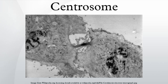The mother centriole, the older of the two in the centriole pair, also has a central role in making cilia and flagella. The centrosome is copied only once per cell cycle so that each daughter cell inherits one centrosome containing two structures called centrioles. The centrosome replicates during the S phase of the cell cycle. During prophase in mitosis, the centrosomes migrate to opposite poles of the cell. The mitotic spindle then forms between the two centrosomes, and upon division, each daughter cell receives one centrosome.